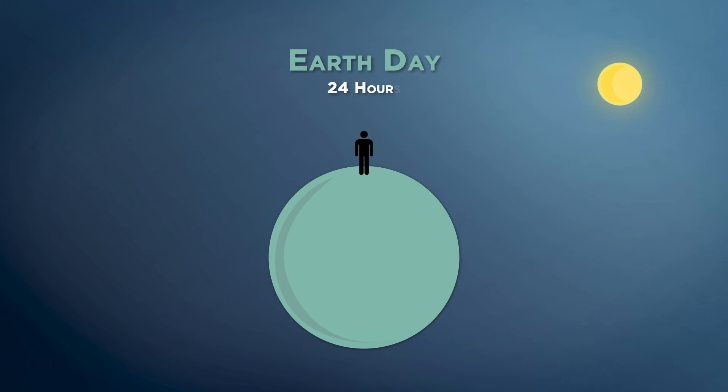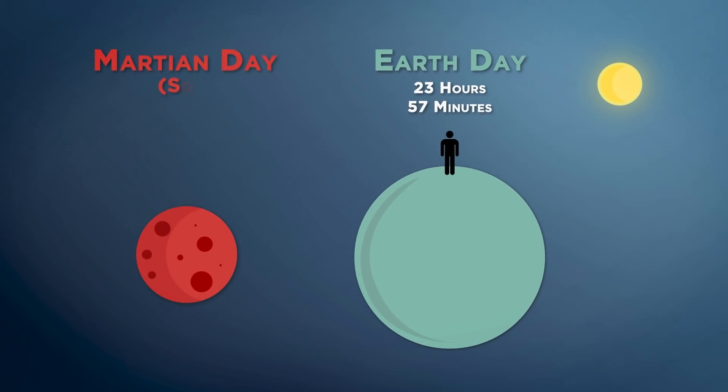That is, if you stand at one location and begin the day with the sun overhead, a full day would not have passed until the sun is directly overhead again the next day. While an Earth day is roughly 24 hours, or specifically 23 hours and 57 minutes to be exact, a Martian day, also known as a Sol, is exactly 24 hours, 39 minutes, and 35 seconds long in Earth time.